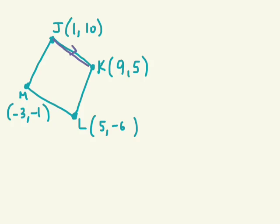So we need to see if J, K is parallel to what? M, L. And we need to prove that, we need to see if J, M is parallel to K, L.